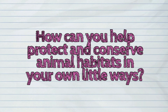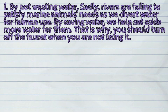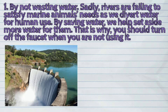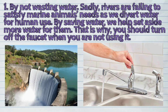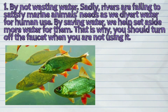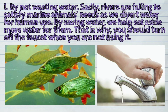So now, how can you help protect and conserve animal habitats in your own little ways? First, by not wasting water. Sadly, rivers are failing to satisfy marine animals' needs as we divert water for human use. By saving water, we help set aside more water for them. That is why you should turn off the faucet when you are not using it.